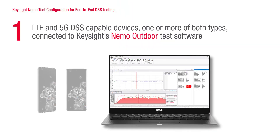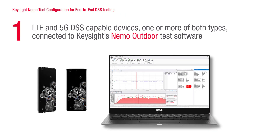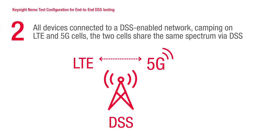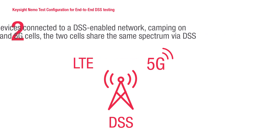LTE and 5G DSS-capable devices — one or more of both types — are connected to Keysight's NEMA outdoor test software. All devices are then connected to a DSS-enabled network, camping on LTE and 5G cells. The two cells share the same spectrum via DSS. To ensure accurate monitoring of the resource allocations, there should be no live traffic in the network under test.